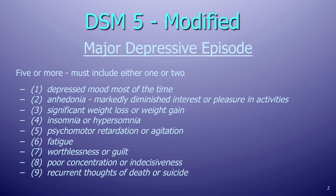Out of the five, you must include either the first or the second point, and you must have enough of the others to make up nine total. A typical depressed person has a pervasively sad mood and seems to have lost the ability to enjoy themselves. In addition, they have changes in weight and sleep — sometimes sleeping too much, sometimes too little, gaining or losing weight, agitation or feeling slowed down, fatigue, worthlessness and guilt, concentration and memory problems, ambivalence, and recurrent thoughts of morbidity or death.